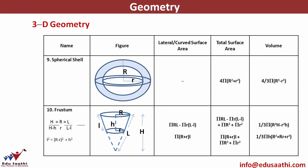For a spherical shell, it is difficult to find the curved surface area, but we can find the total surface area. For a closed shell, the total surface area is 4π(R² + r²), where R is the radius of the outer shell and r is the radius of the inner shell. The volume is the volume of the outer sphere minus the volume of the inner sphere: (4/3)πR³ − (4/3)πr³.